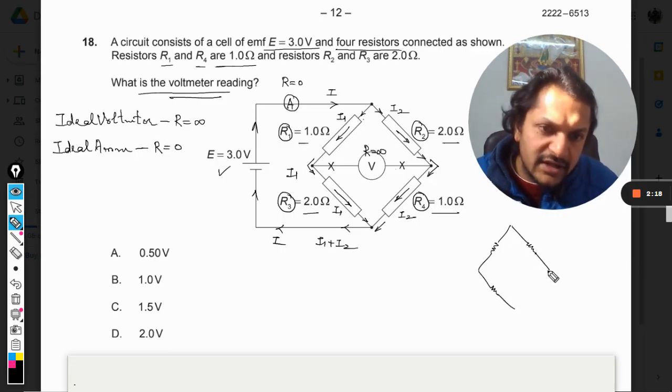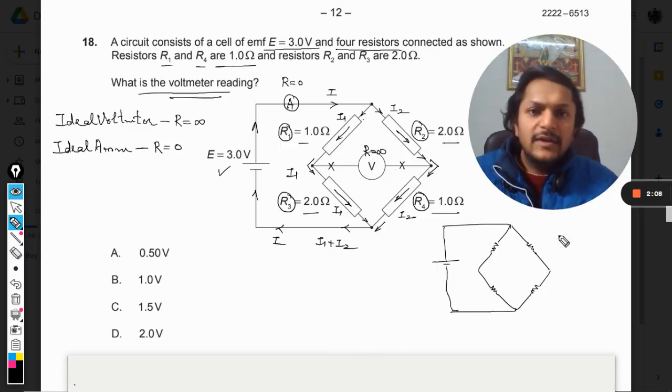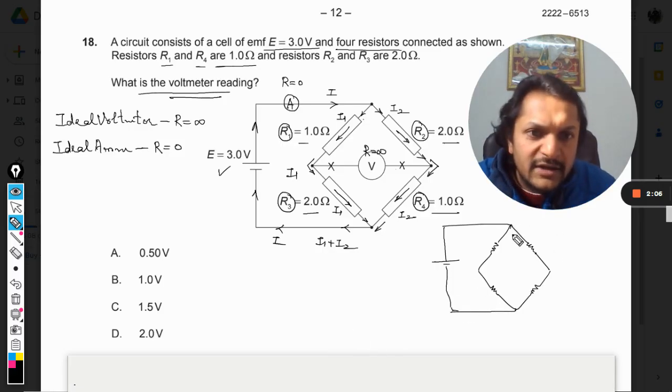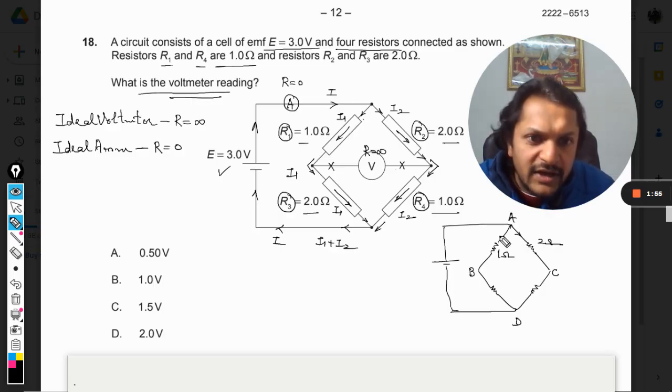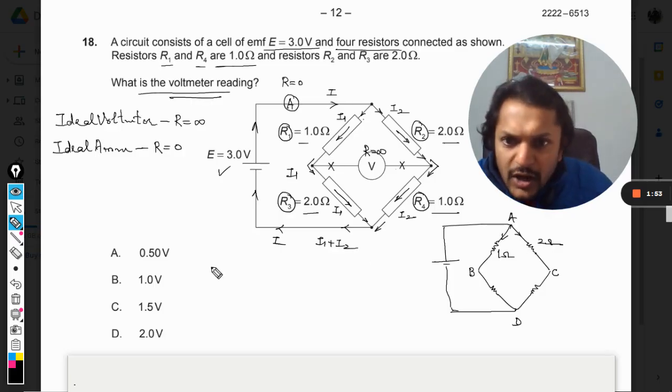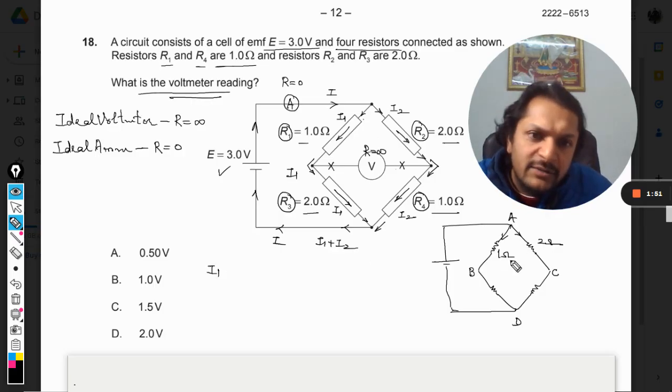So our circuit reduces to this, like this. Now let me name these junctions like A, B, and this is C, and this is D. So this is 1 ohm and this is 2 ohm. Now I want to find I1 and I2.